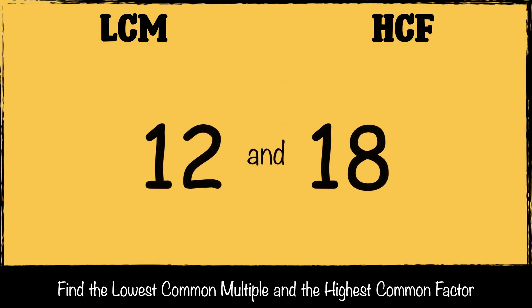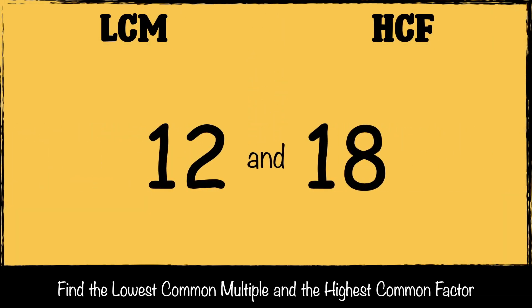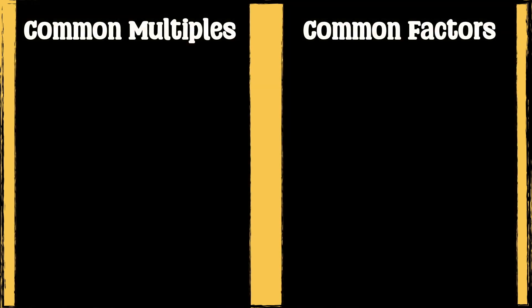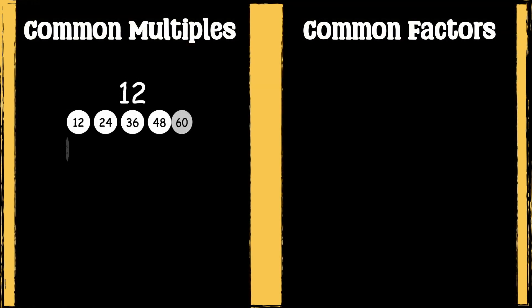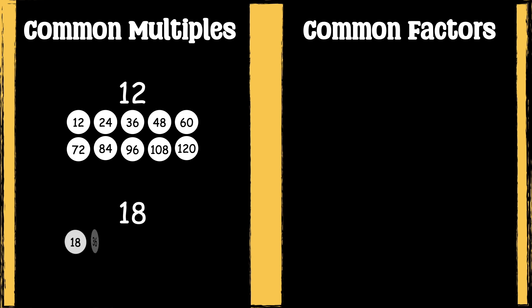Here's one more example. We're going to find the lowest common multiple and the highest common factor of 12 and 18. Here are some of the multiples of 12 and some of the multiples of 18.